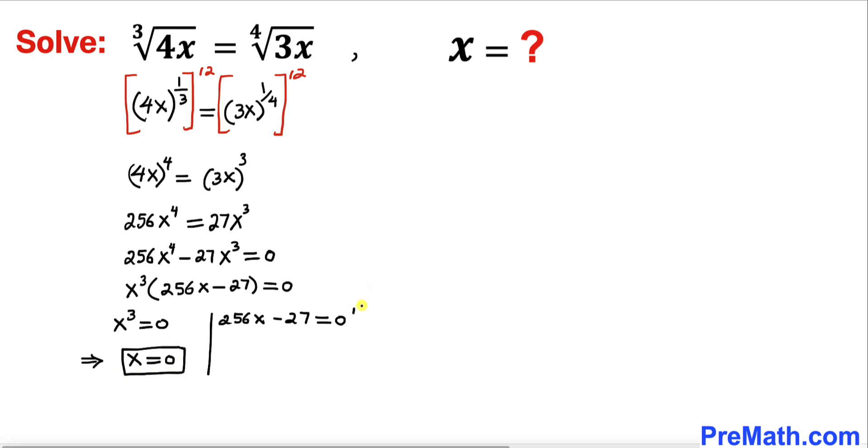Let's focus now on this equation. Let's add 27 on both sides. So we ended up 256x = 27. So let's go ahead and divide both sides by 256. So our x value turns out to be 27 divided by 256.